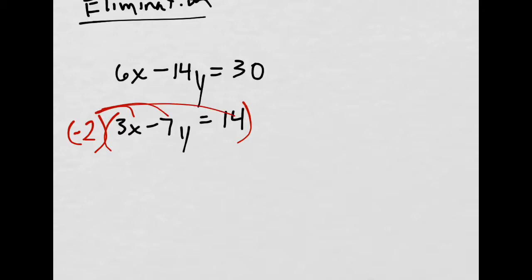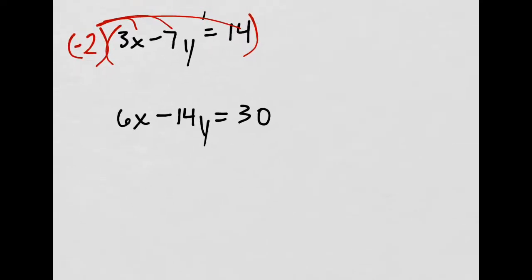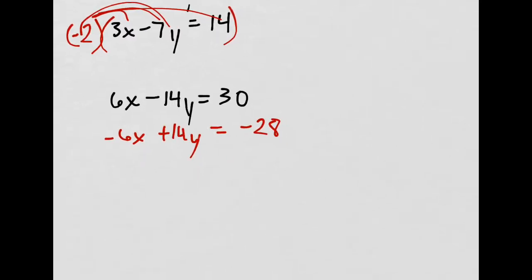So the next thing I'll do is I'll move this down, and then I'll rewrite the second equation. That would be negative 6x, right, plus 14y. If you're not good at multiplying, this becomes really difficult. And then negative 2 times 14 is negative 28. So here we go.